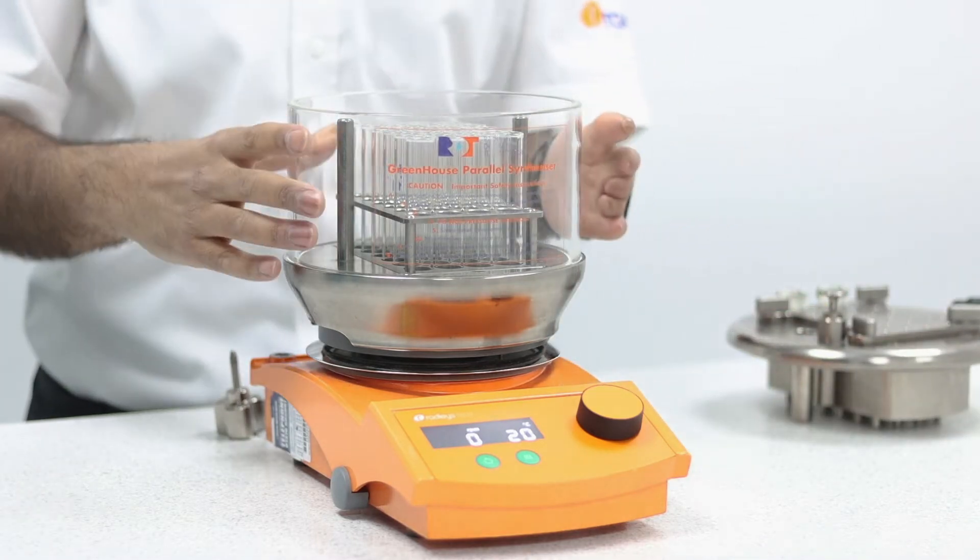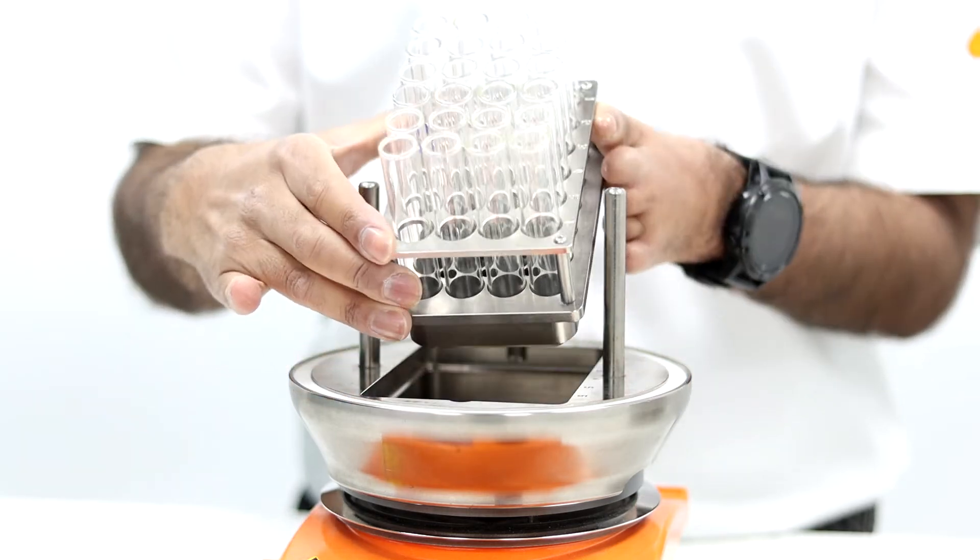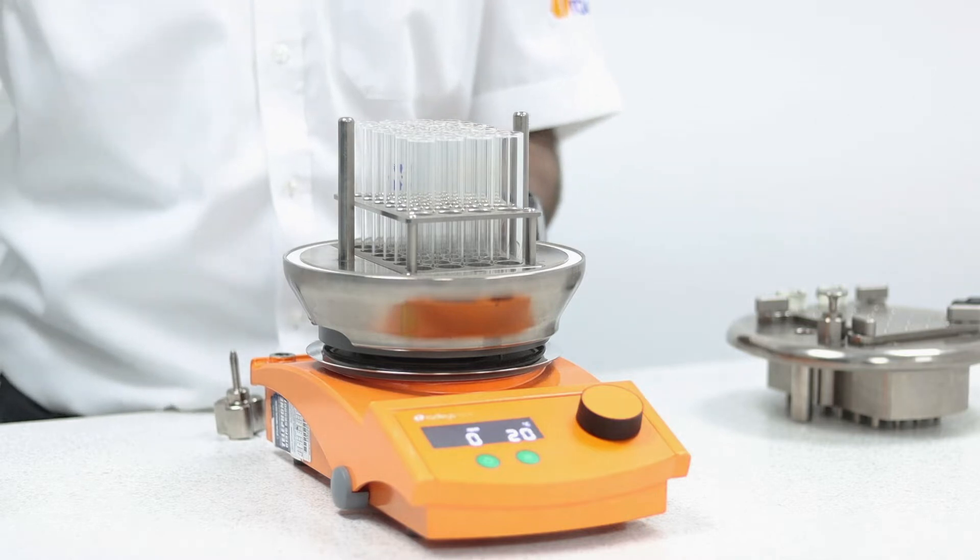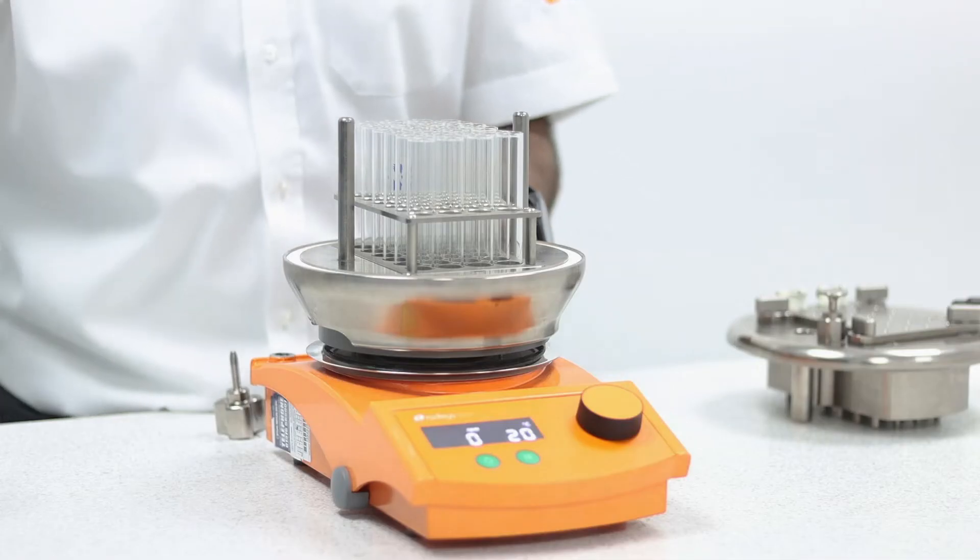In the reaction block you can hold up to 24 glass reaction tubes. The block itself is the same footprint as a standard microtiter plate and this allows the rapid transfer of material from your standard microtiter plate using a multi-channel pipette into a reaction block.